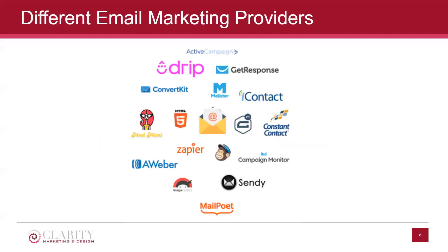There are tons of different email marketing providers. I'm focusing on MailChimp today, but there are many. Even for myself, when I started off many years ago, I used YMLP.com, and then I went to MailChimp. I've actually been with two email marketing providers. Other popular ones include Constant Contact — a lot of chambers have Constant Contact — Campaign Monitor, and Drip. But today we are going to focus on MailChimp.